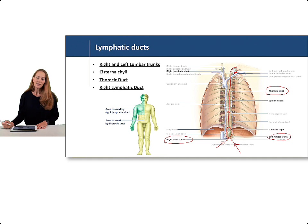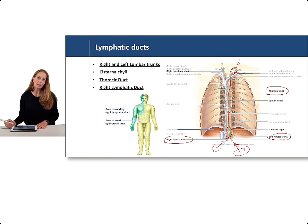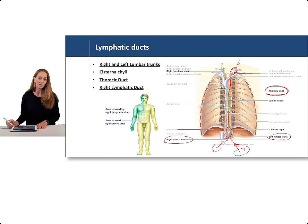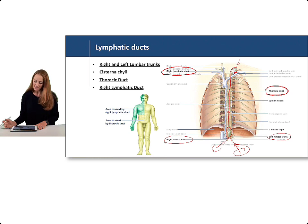The thoracic duct drains the right and left lower limbs, and it also receives drainage from the left side of the upper body — the left head, neck, left upper limb, and left chest. So the majority of drainage in the lymphatic system goes through the thoracic duct. The remaining lymphatic fluid goes into the right lymphatic duct, which drains the right side of the head, neck, right upper limb, and right chest — draining into the right subclavian vein.